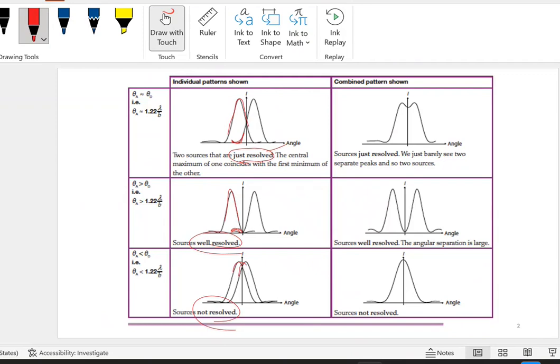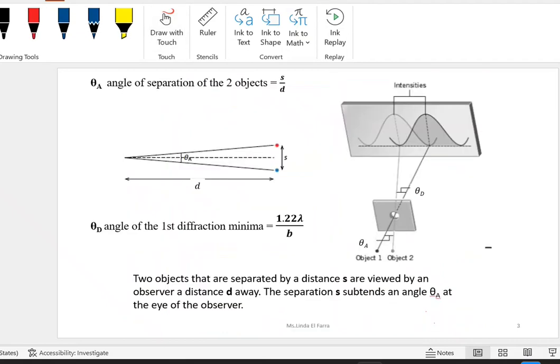Now, just resolved, theta A, theta A equals to theta D. Here, theta A well resolved is greater than theta D. Not resolved is theta A less than theta D. Now, what is the difference between theta A and theta D?